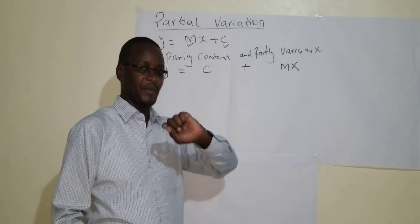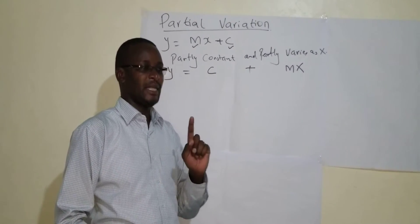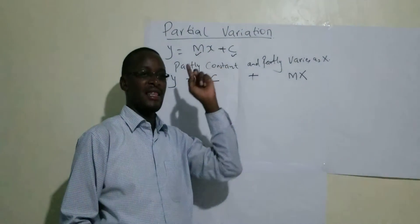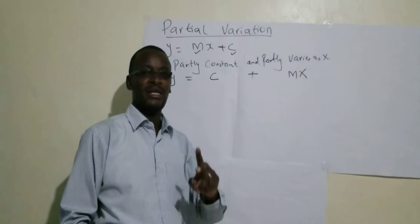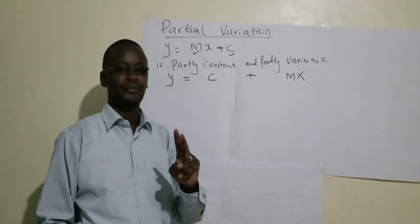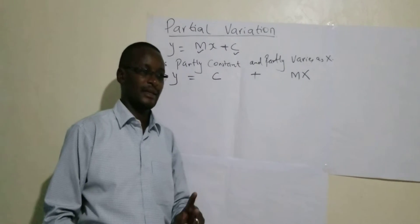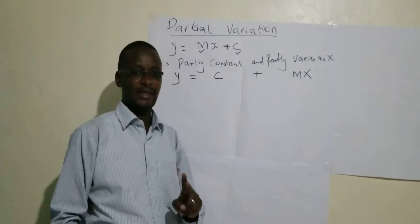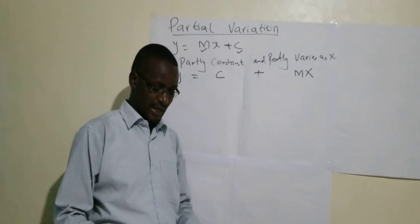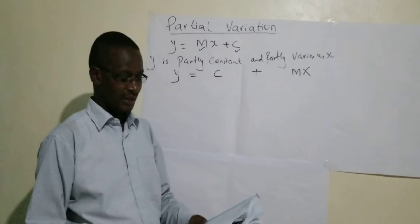Something to note, even as we go to the next example, is that in partial variation there must be two constants. There must be two constants. And in this case I am using m and c, but you can use any other letter.